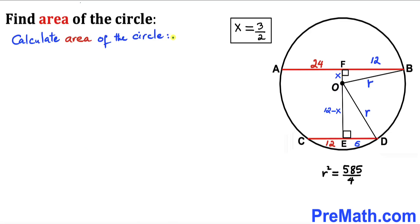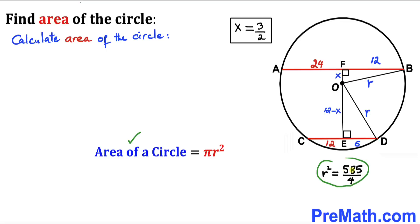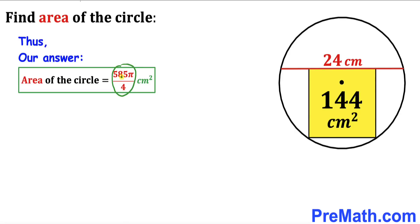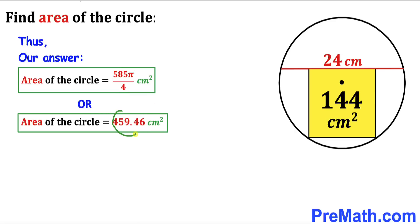Here's our final step: let's calculate the area of this circle. Recalling the formula, area equals pi times r squared. In our case r squared is 585/4, so the area equals pi times 585/4, which can also be written as 585π over 4 centimeter square. This equals approximately 459.46 centimeter square. Thanks for watching and please don't forget to subscribe to my channel for more exciting videos.